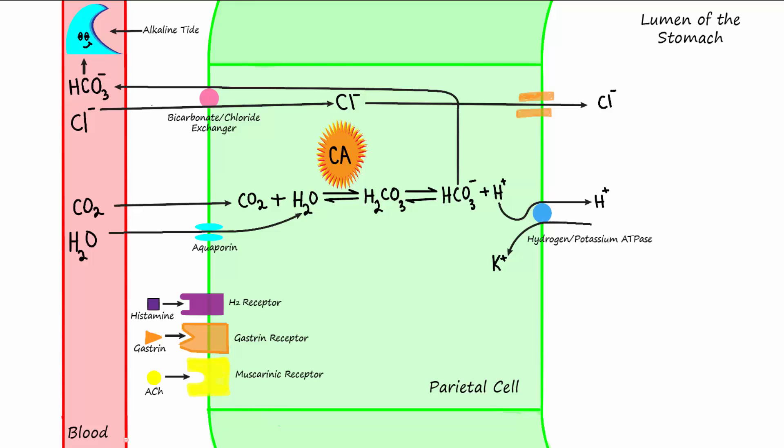Last is the muscarinic receptor which binds to the main ligand of the parasympathetic nervous system, that being acetylcholine. Hopefully you remember that activating the parasympathetic nervous system, which is the rest and digest division of the autonomic nervous system, will increase activity of the hydrogen potassium pump to increase the production of stomach acid.